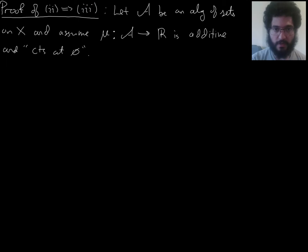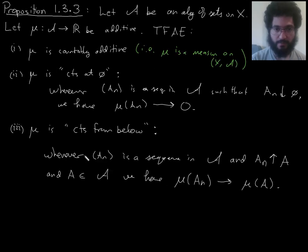So, now my goal is to prove 3, which is continuous from below. That means I need to suppose that I have some sequence of sets A_n in fancy A that build up to some set A, which is also in fancy A.